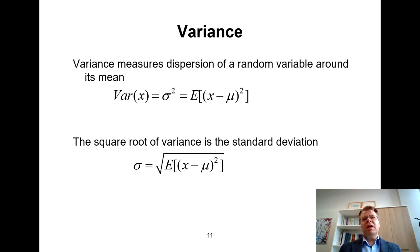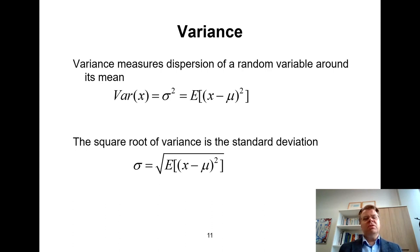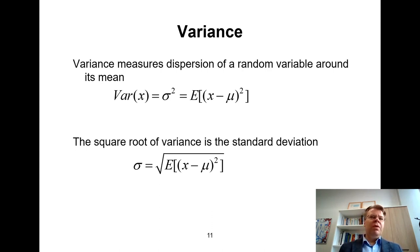Standard deviation is often useful because it's measured in the same units as the original variable, whereas variance is in squared units. For example, if random variable X is measured in euros — say, turnover of a company — then the unit of measurement for variance would be euros squared. But the square root is expressed also in euros. That's a practical reason why the square root is often a more convenient measure of dispersion compared to the variance. From a theoretical point of view, there is not necessarily a big difference.